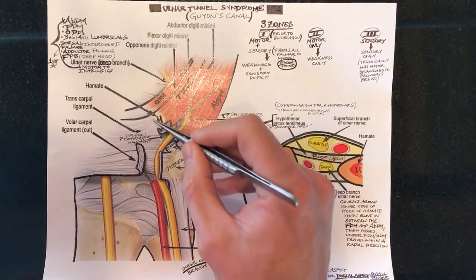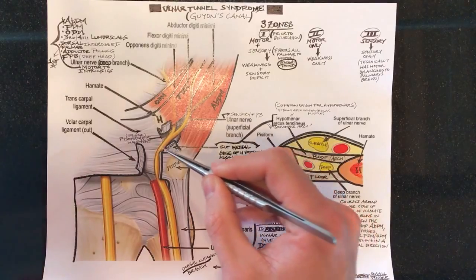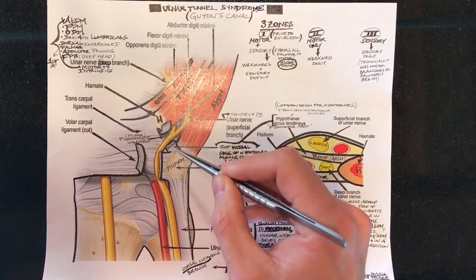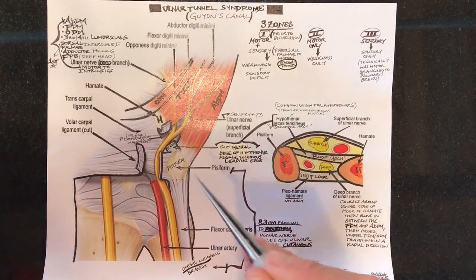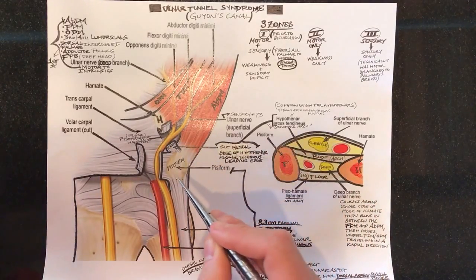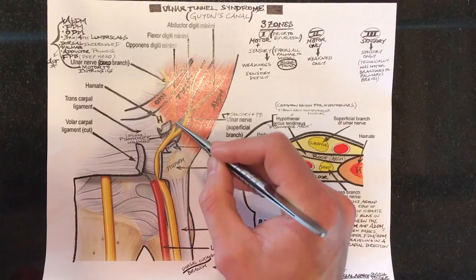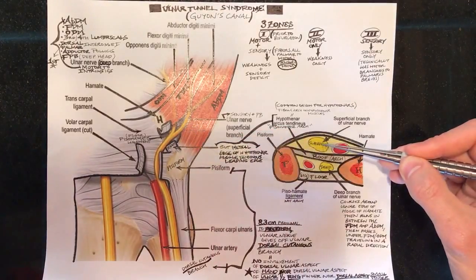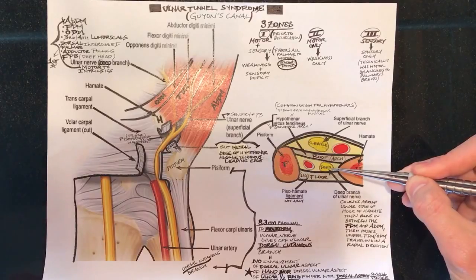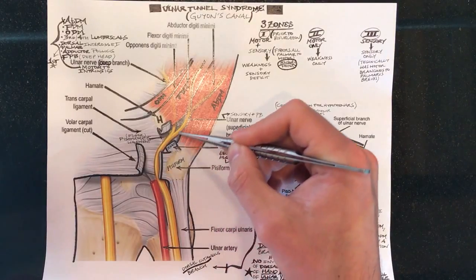So let's talk about the different anatomic landmarks. The pisiform and the hamate are the most important because they're ligamentous structures that span between the two that basically form the tunnel. The most important things that you need to remember are that the nerve will branch into a deep branch and a superficial branch. Here's the superficial branch and here's the deep branch. You can see here's the ulnar nerve coming down and it will divide here.